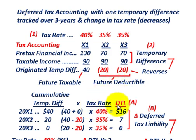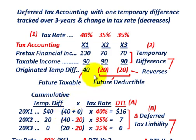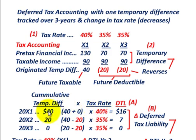Next, we have to determine our deferred tax liability. The DTL arises because we started with a future taxable amount. Looking at cumulative temporary differences: for year X1, we have $40,000 of temporary difference originated. Starting with a zero beginning balance, the deferred tax liability is simply 40% times $40,000, giving us a deferred tax liability of $16,000.